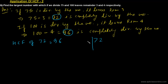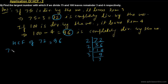First we have to express 72 as prime factorization: 72 = 36 × 2 = 18 × 2 × 2 = 9 × 2 × 2 × 2 = 3 × 3 × 2 × 2 × 2. So 72 can be written as 2³ × 3².